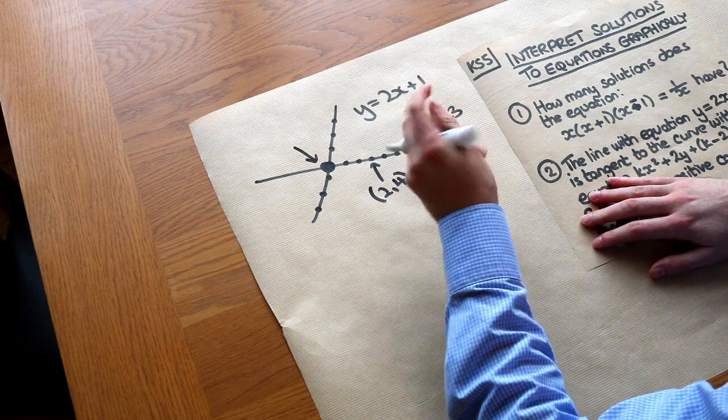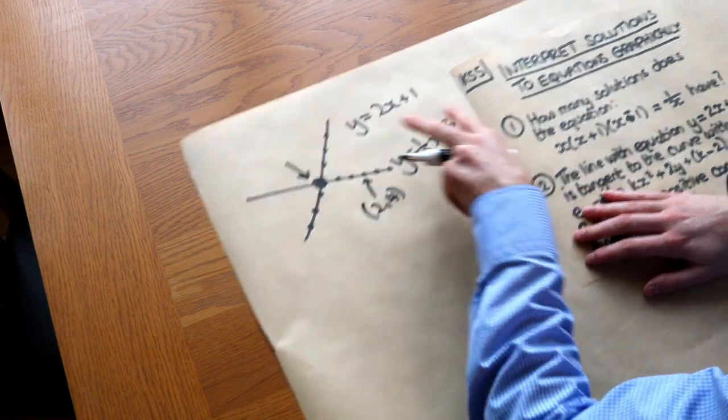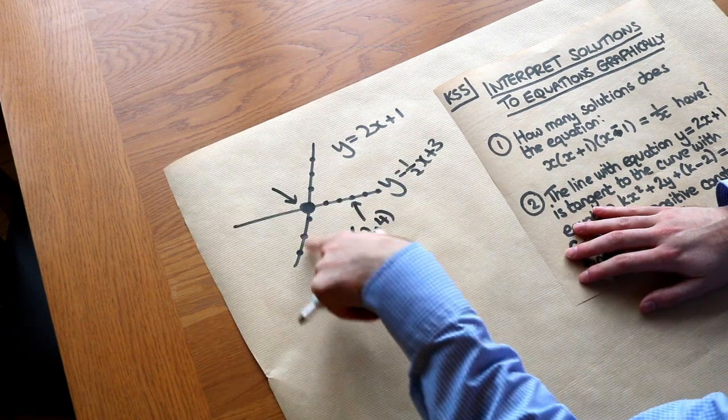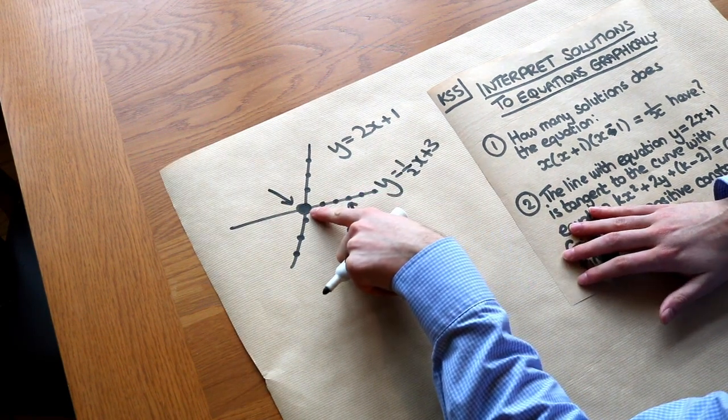So the principle is just this. If we want to find values of x and y which satisfy both of these equations simultaneously, then we could draw the two lines and then find the point of intersection of the two lines.